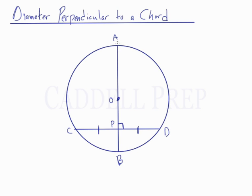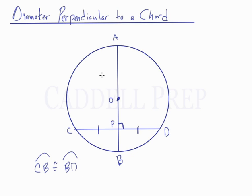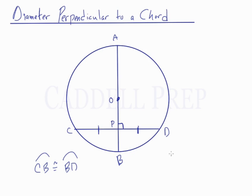Looking back at our original diagram, we have AB intersecting CD. Not only are these two line segments going to be the same length, but the arcs are also going to be the same. Arc CB is congruent to arc BD. Also, arc AC is congruent to arc AD — these two larger arcs are also congruent to each other.